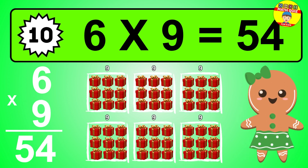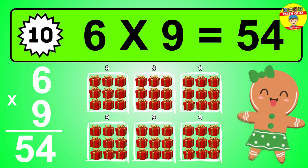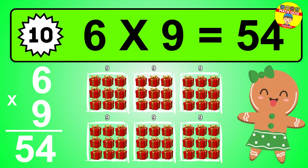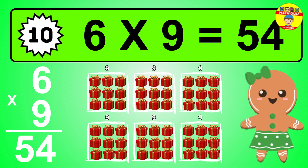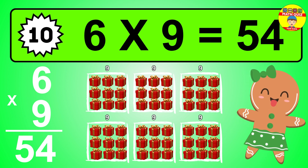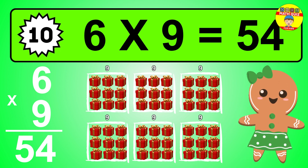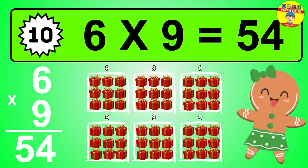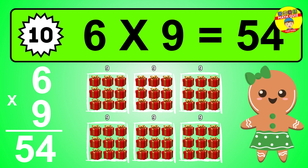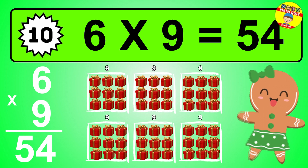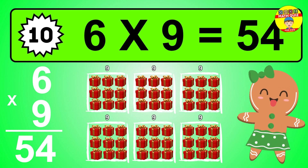The answer is six times nine is fifty-four. To calculate, we have six groups with nine balls each one. So how many balls do we have? Fifty-four balls.